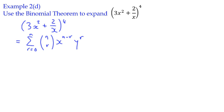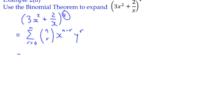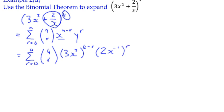We can fill it out for our values of N, which is 4, and say that it's the sum from R = 0 to 4 of 4 choose R. Now, the first term, which is X here, is actually 3x². So we've got 3x² to the power of 4 minus R multiplied by our second term, which is positive 2/X. I'm going to write that down as 2x to the negative 1 to the power R.